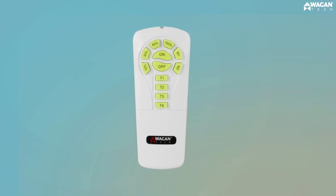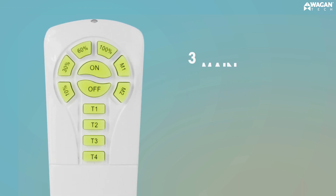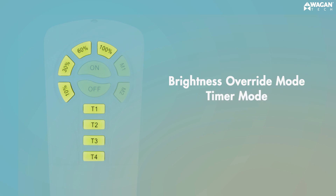Now that you've activated the light, let's go over different light functions and how to use the remote control. The remote control allows you to control and program the light settings. There are three main modes the light can be operated in: motion detection mode, which is the basic mode you will likely use on a day-to-day basis; brightness override mode; and timer mode. The last two modes are advanced modes which will allow you to customize the light's operation.